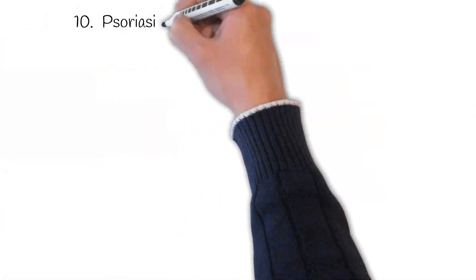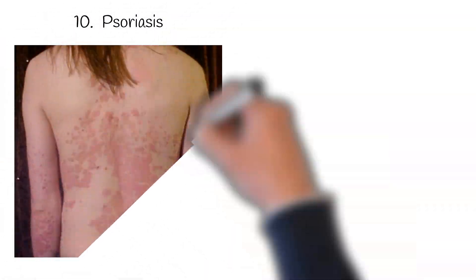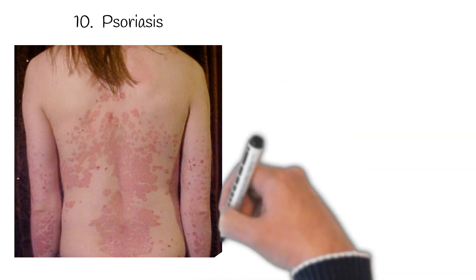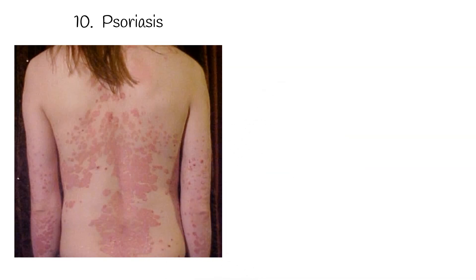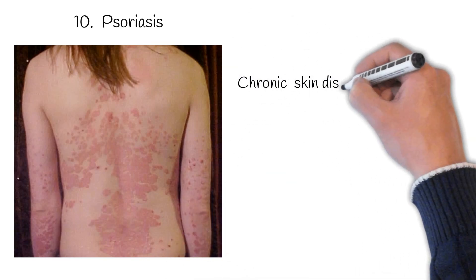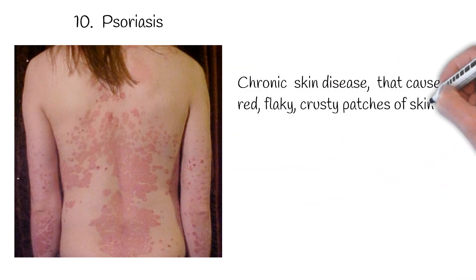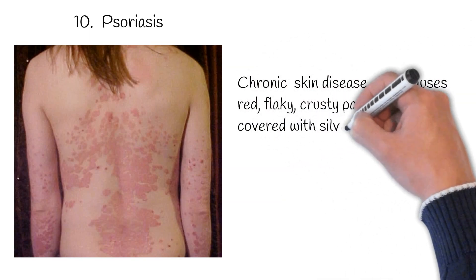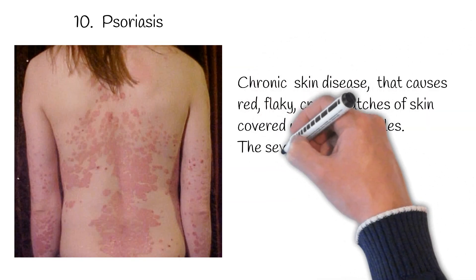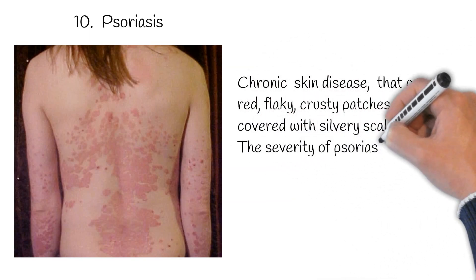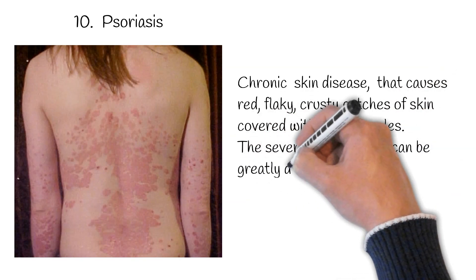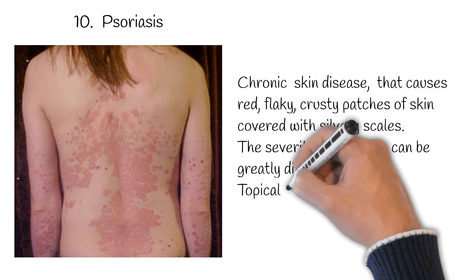Psoriasis is a chronic skin disease that causes red, flaky, crusty patches of skin covered with silvery scales. The severity of psoriasis can vary greatly. Topical corticosteroids are used for management, and in many cases psoriasis is a lifelong condition.